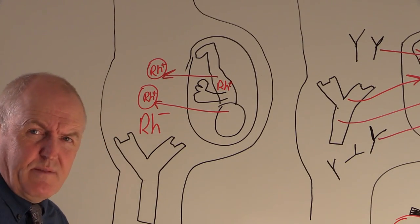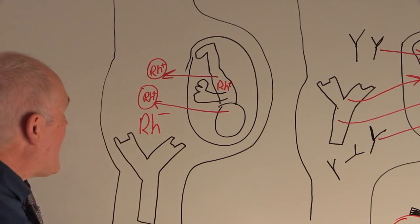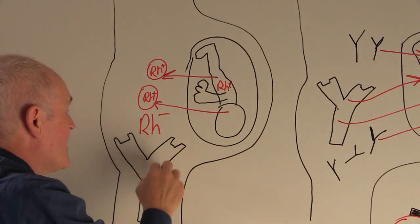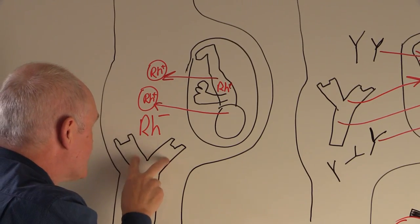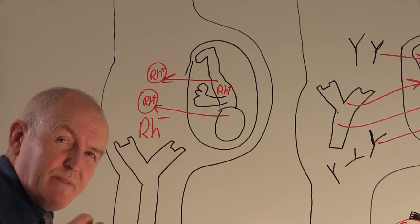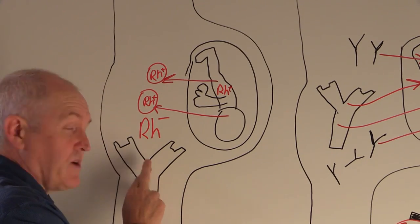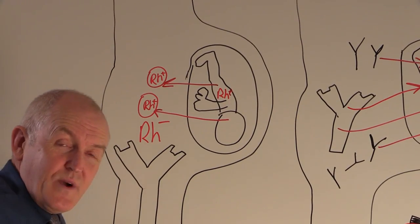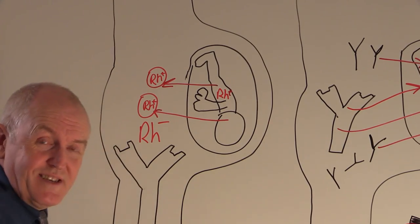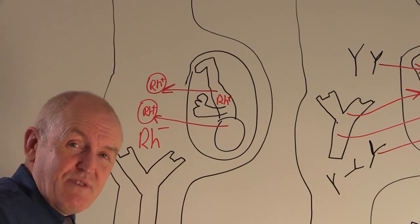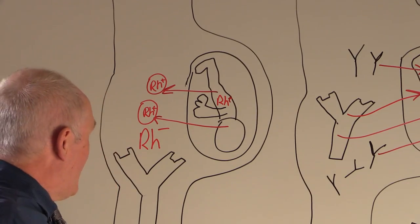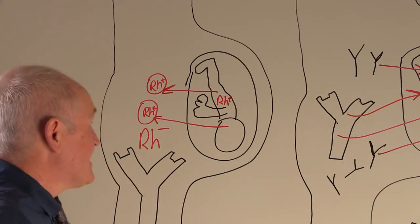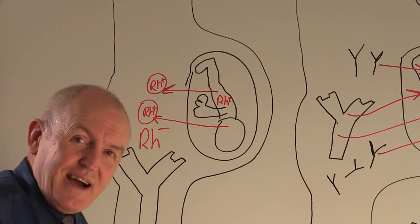Any fetal Rhesus positive red cells that have entered the mother's circulation will be quickly agglutinated and haemolysed by the injected anti-D antibodies. Because this is passive immunisation, within a few months the mother will have cleared all of these antibodies, and crucially she will not have produced her own. By giving anti-D — these anti-Rhesus or anti-D immunoglobulins — we're mopping up, like a sponge, all the fetal red cells and getting rid of them very quickly, probably within hours. This means the time the mother is exposed to the Rhesus factor antigen is very short, and she will not have time to produce her own antibodies.